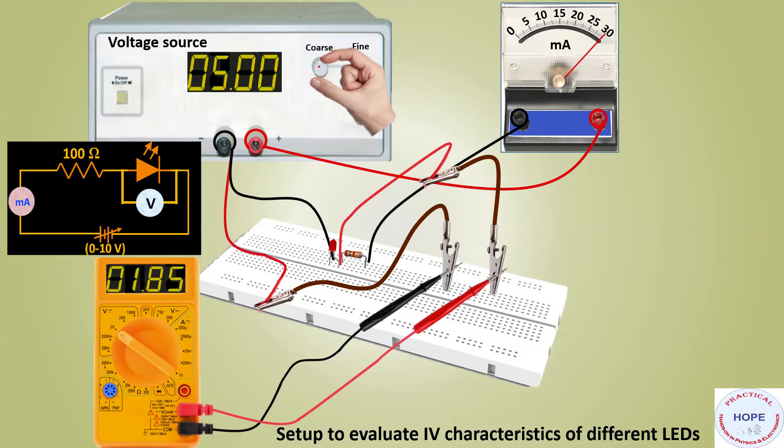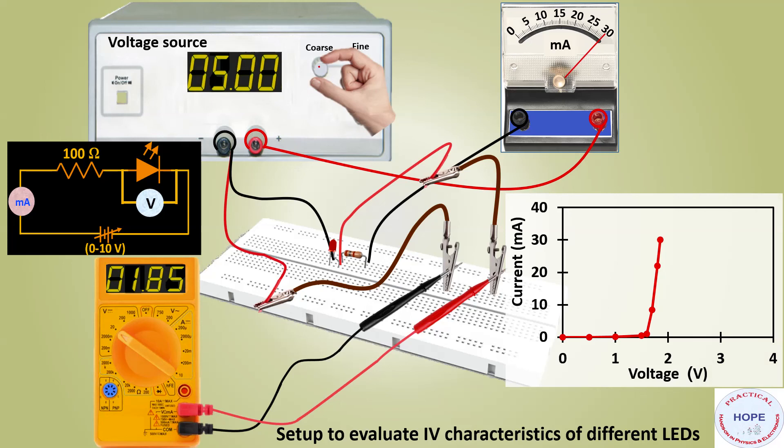Now we have the IV data of red LED. Let's plot it. The curve looks like this. We can make a tangent to this curve and evaluate the value of turn-on voltage—it is 1.65 volts.